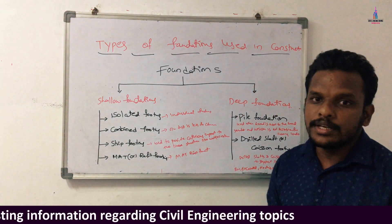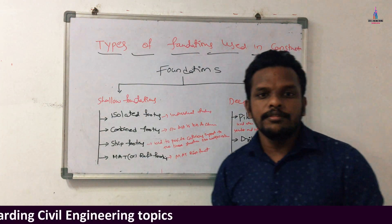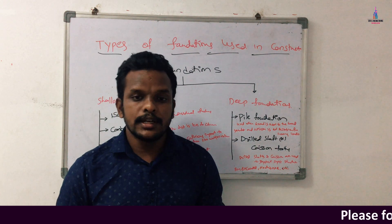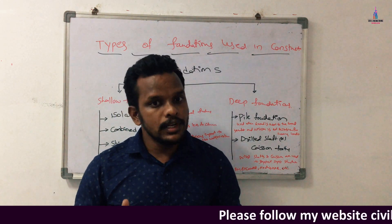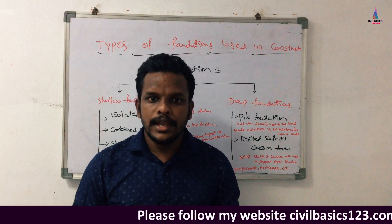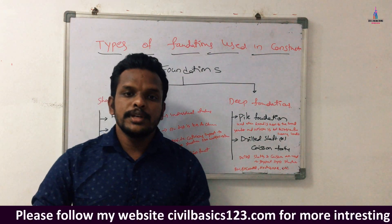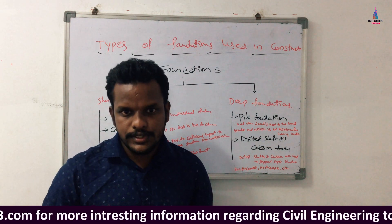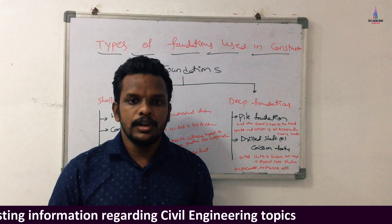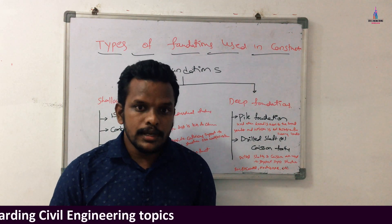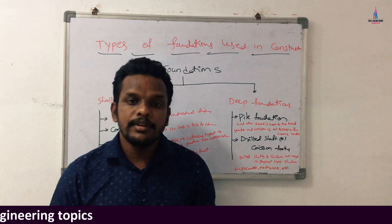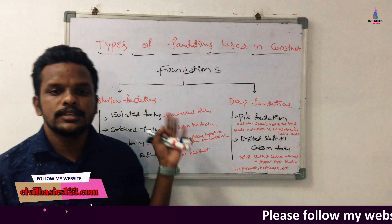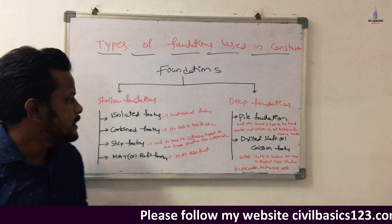The first type under shallow foundations is the isolated footing. We construct isolated footings in building structures where the center-to-center distance between columns is greater — this is also called individual footing. For example, in a G+1 structural model with 12 columns, if the center-to-center distance between columns is greater than 10 feet, we use isolated footing.